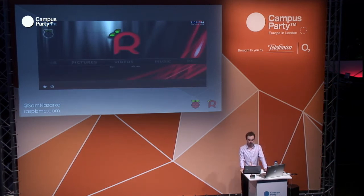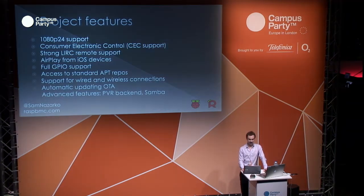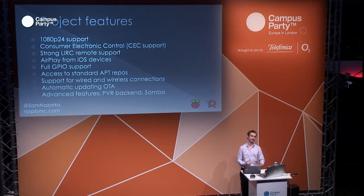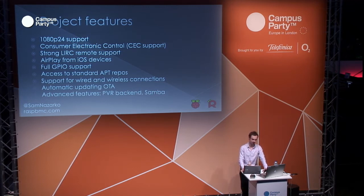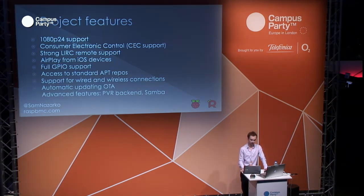After install, it looks pretty much like any other XBMC install, except we've got a custom skin designed by a community member. In terms of project features: we have 1080p 24Hz support of MPEG2, VC1, and H264. We've got CEC support so you can use your TV remote. AirPlay, GPIO so you can use custom IR receivers. Pretty much all wireless adapters work out of the box. Automatic updating, features like TV head end as a TV server so you can add PVR capabilities with a DVB tuner. And you also have access to the standard apt repo, so you can install any packages you could get on a Debian system.